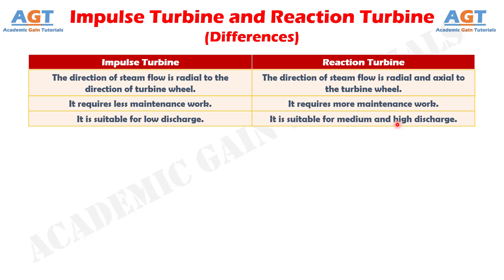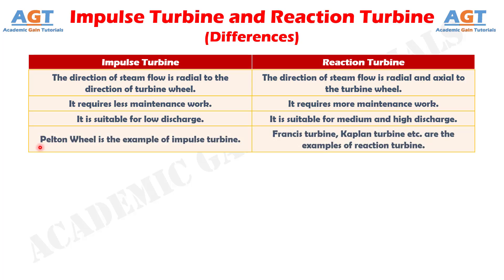And difference number 11: The Pelton wheel is the example of impulse turbine. Whereas, Francis turbine and Kaplan turbine are two examples of reaction turbine.